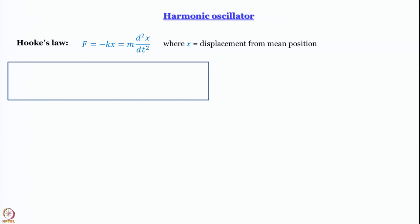Why should we discuss the harmonic oscillator in a quantum chemistry course? The biggest reason from the point of view of a chemist is that a harmonic oscillator provides an approximate model for a vibrating diatomic molecule. The force constant k tells us how strong a spring is. We approximate the chemical bond between two atoms in a diatomic molecule as a spring with spring constant k, so k automatically becomes bond strength.